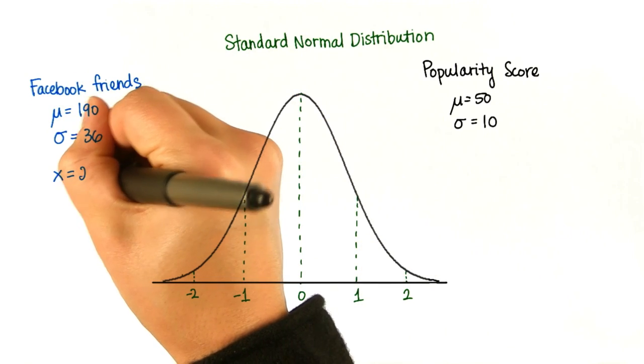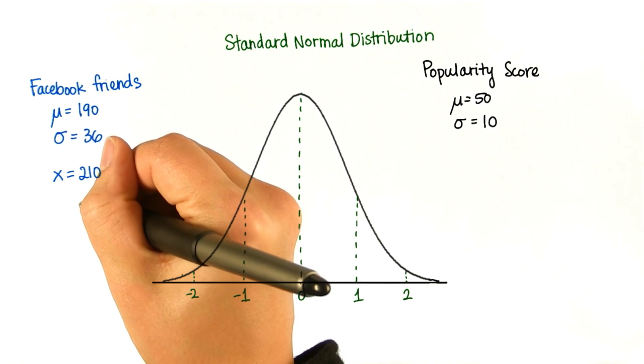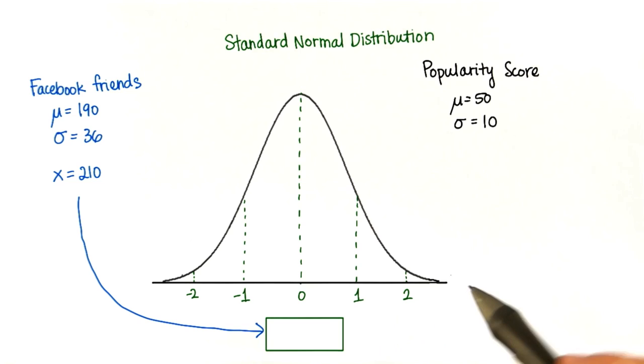So let's say that someone has 210 Facebook friends. Let's first convert this to a z-score. What's that going to be, and where does it fall on this distribution?